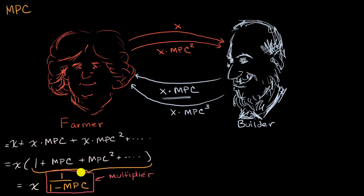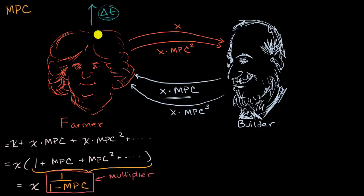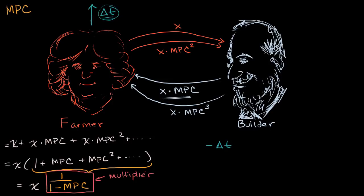Now let's do something interesting and new. Let's imagine a magic government shows up on this island and decides to tax the farmer — just takes some money away. The amount they take away we'll call ΔT (delta T), your change in taxes. If ΔT is positive, the government is getting money and it's being taken away from the farmer. So what's the farmer going to do? She now has ΔT fewer dollars, which is going to decrease her consumption. How much? The amount given to the government times her marginal propensity to consume.